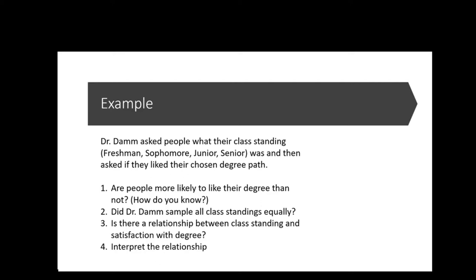Now that we've learned the basics of how the chi-square calculation works, let's see how this would look in an example and see how JASP can help us get the answers. Dr. Dam asked people what their class standing was — freshman, sophomore, junior, senior — which is ordinal. She also asked if they liked their degree path, which is a yes-no answer and is nominal. So we're dealing with qualitative variables here.